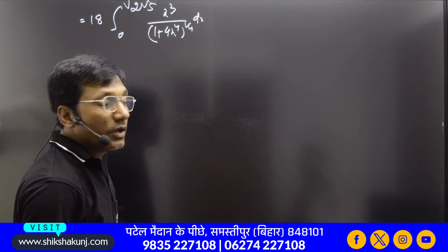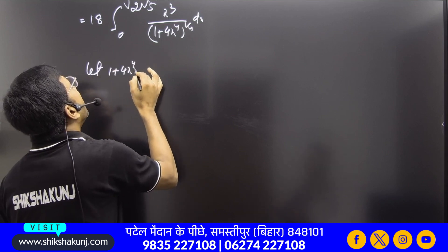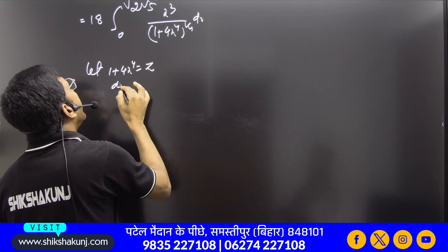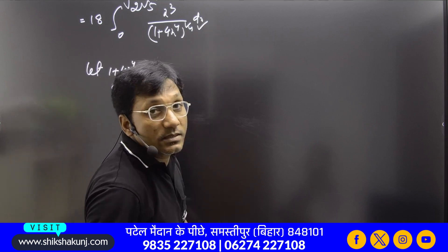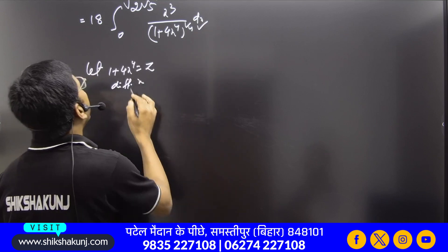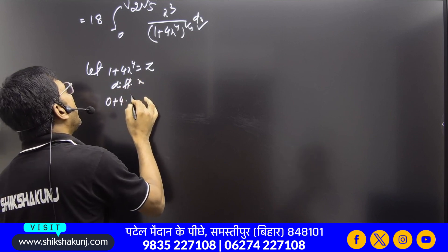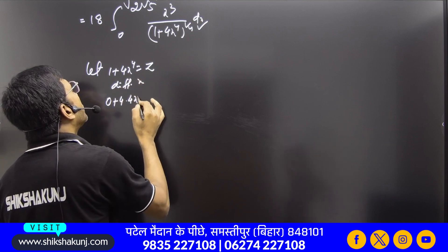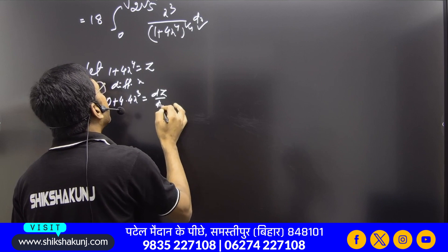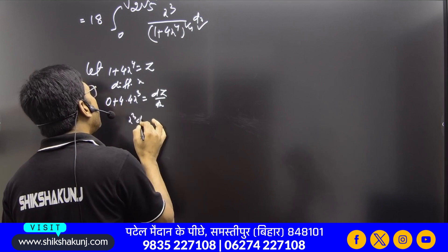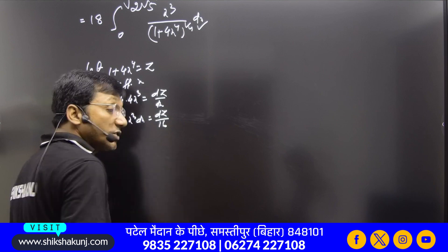Substitute: 1 + 4x⁴ = z. Differentiate with respect to x: 4 times 4x³ dx = dz, so 16x³ dx = dz, meaning x³ dx = dz/16.